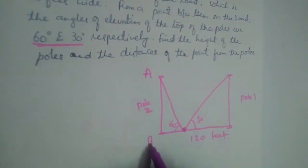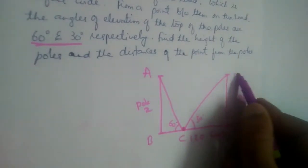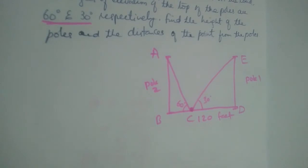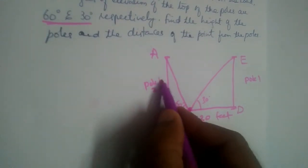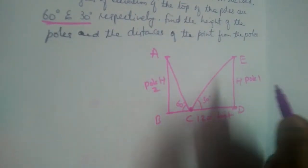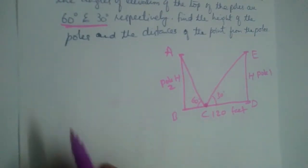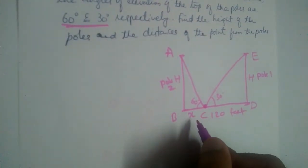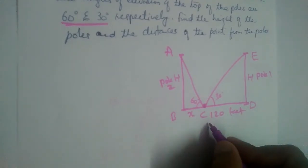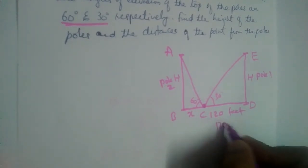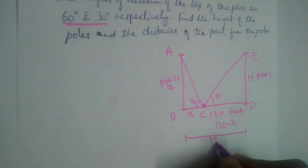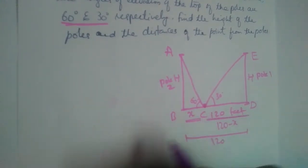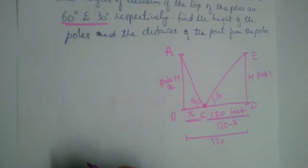Let us name the points A, B, C, D, and E. Let the height of the poles be H, so both poles are H. Now if we consider BC as X, then CD will be 120 minus X, because the whole road is 120 feet, this part is X, so CD equals 120 minus X.